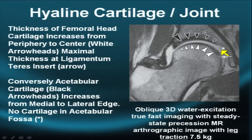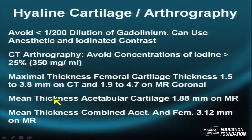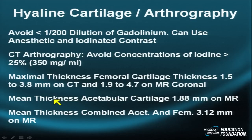This is depicted on an oblique coronal 3D water excitation image performed with seven and a half kilograms of traction on the leg. Regarding arthrographic technique and hip hyaline cartilage assessment: for any joint, avoid dilutions more concentrated than 1 to 200 gadolinium to saline. You can use anesthetic and iodinated contrast to help localize position, but for a pure CT arthrogram, avoid very dense concentrations of iodine, which can obscure anatomy — anything at or less than 25% or 350 mg/mL will do.